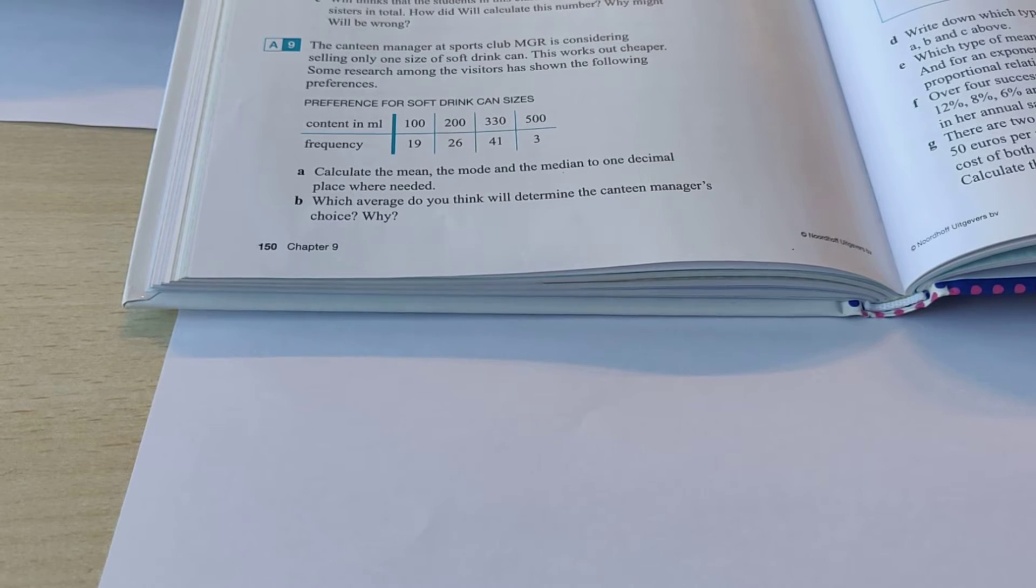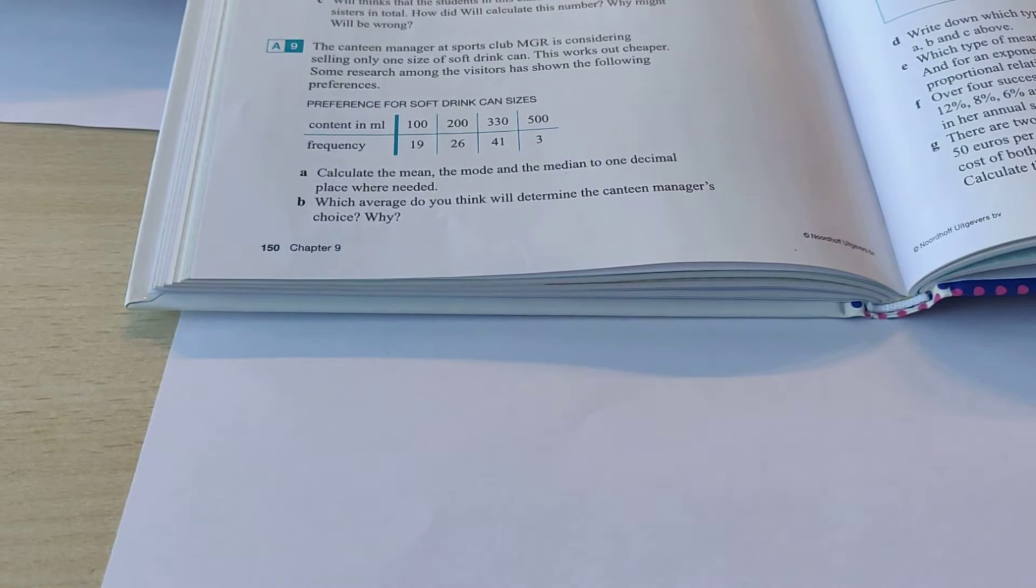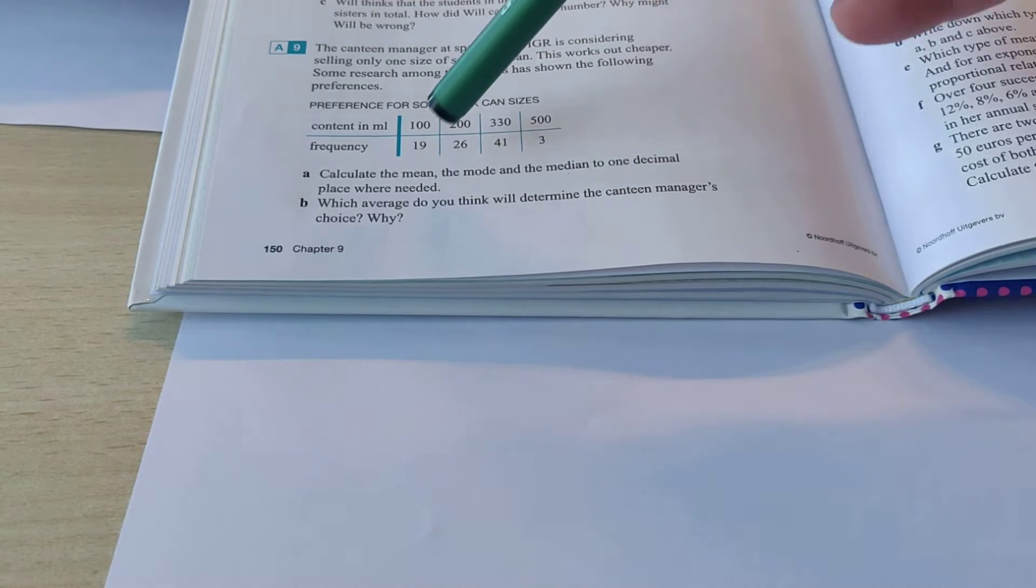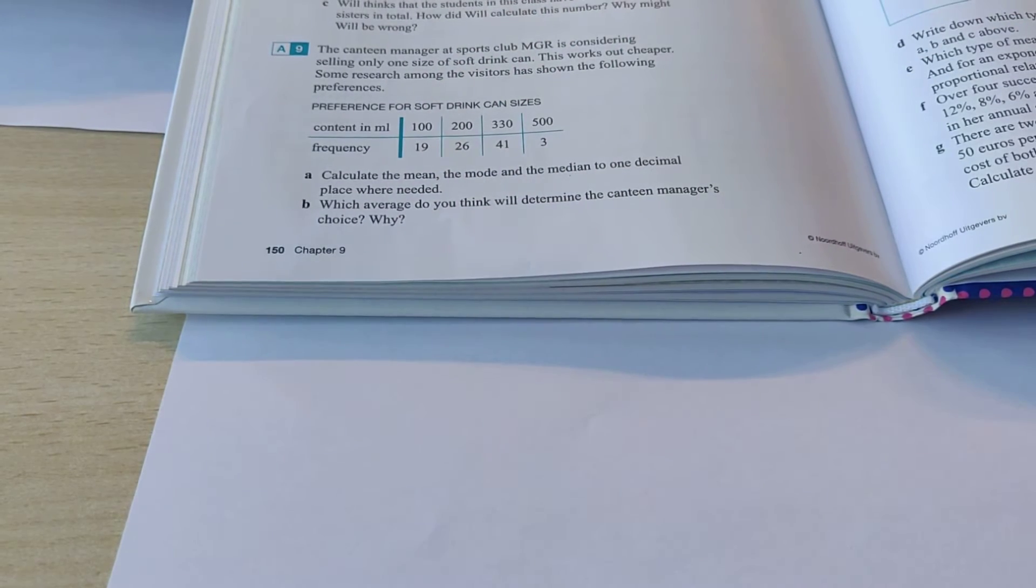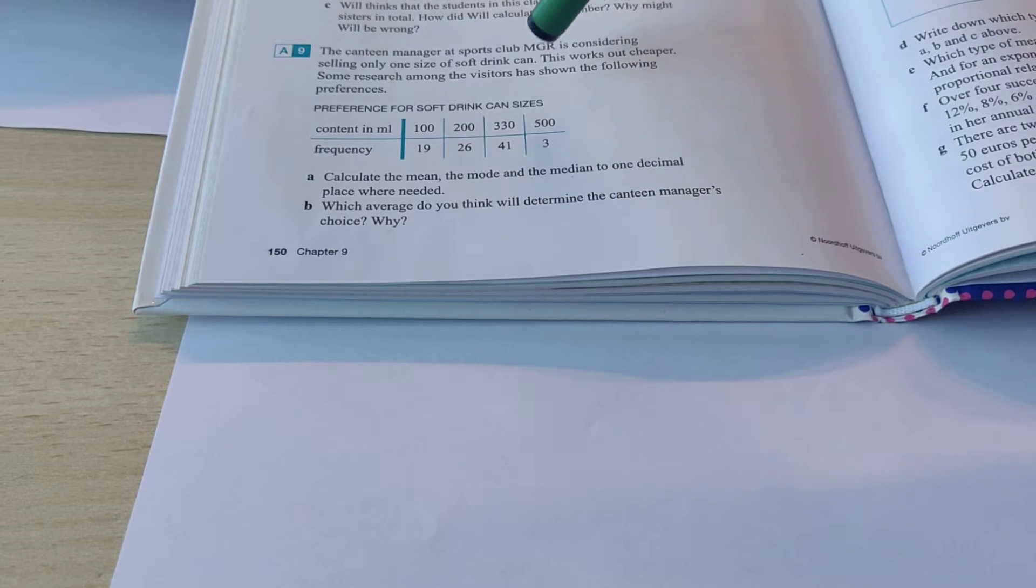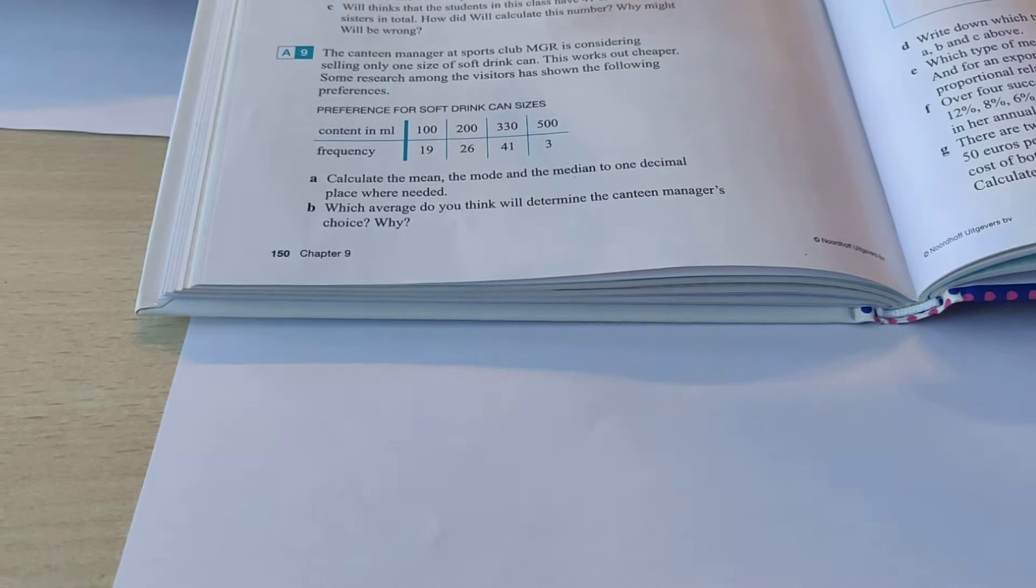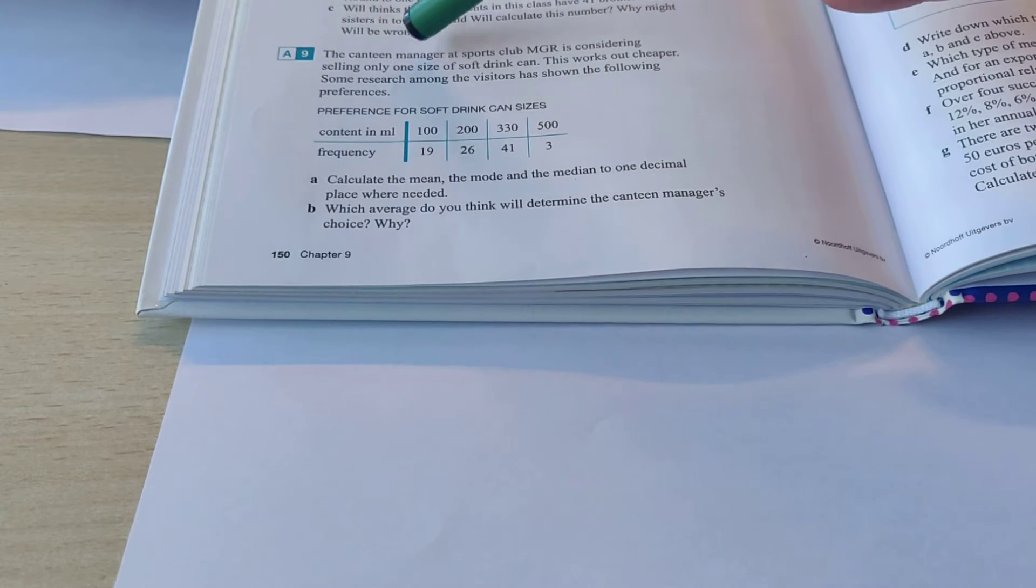Alright, this is a video for 3VT about exercise 9. In exercise 9, you see the difference between the mean, mode and median. Here it says, the canteen manager at Sports Club MGR is considering selling only one size of soft drink can. This works out cheaper.